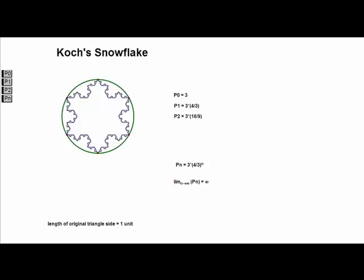If we inscribe our original equilateral triangle into a circle, we can see that the area of Koch's snowflake is bound to the area of the circle, whereas the perimeter increases to infinity. Therefore, we have a finite area for an infinite perimeter.